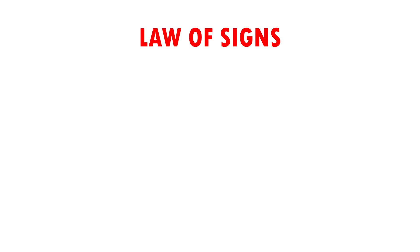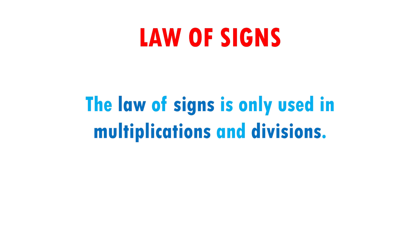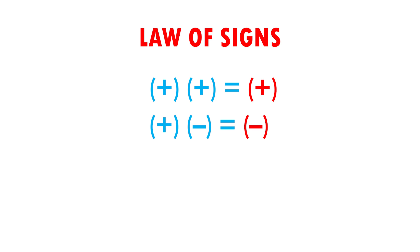To begin with, I will tell you that the law of science is only used in multiplication and division. Remember that in math, parenthesis means multiplication. The rule of signs is as follows: positive times positive equals positive. Positive times negative equals negative. Negative times negative equals positive.